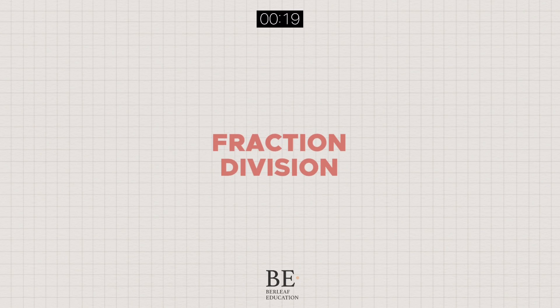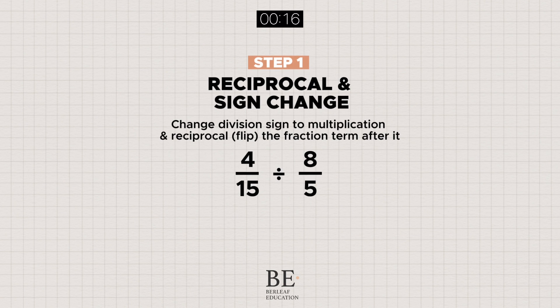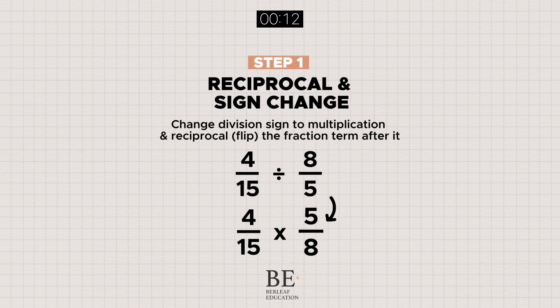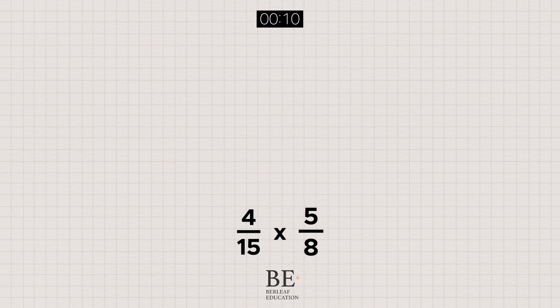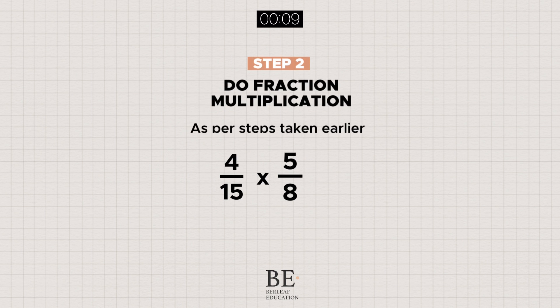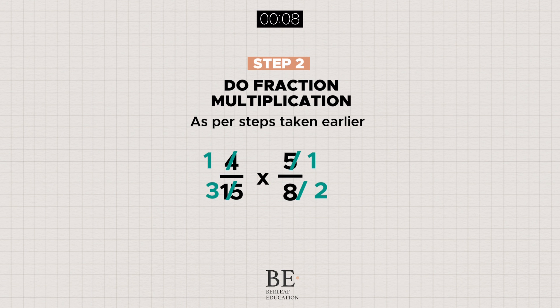Next up, fraction division. Start off with changing the division sign to a multiplication, and reciprocal the fraction term right after. And simply follow on by doing a fraction multiplication, just as we did earlier.